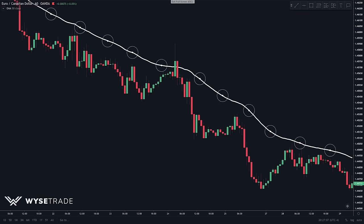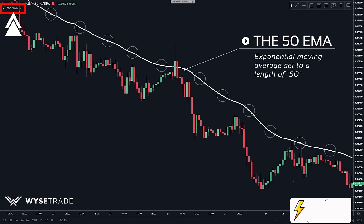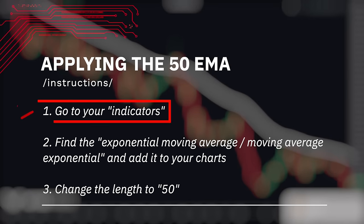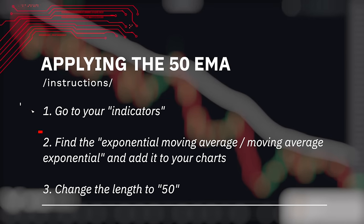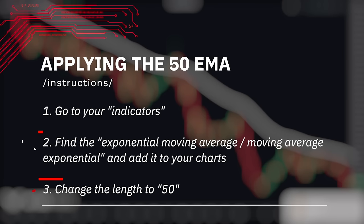The specific moving average we use is the exponential moving average with the length of 50, meaning the 50 EMA. From whichever charting and trading platform you are using, go to your indicators, find the exponential moving average and add it to your charts. Set the length to 50.